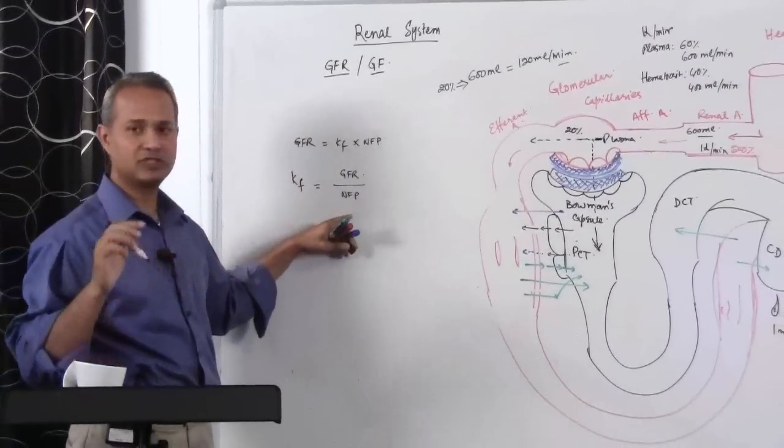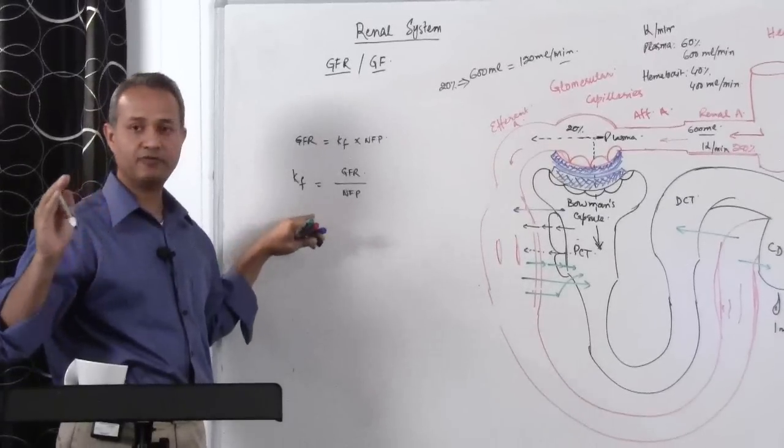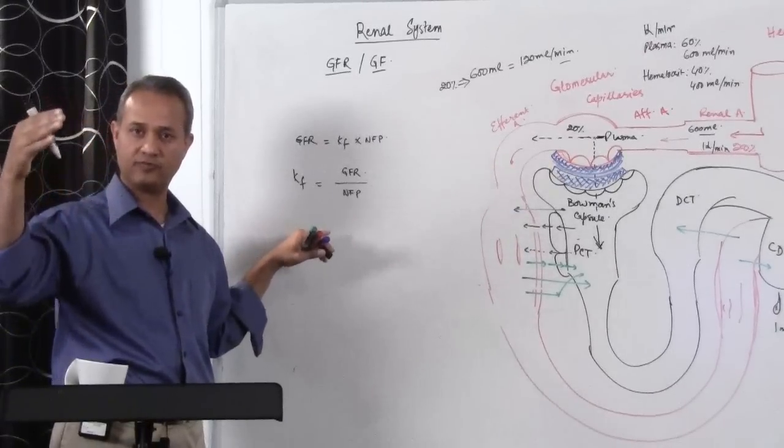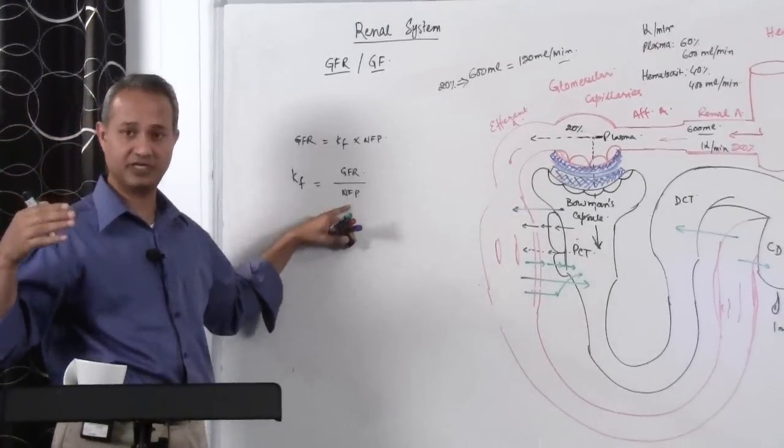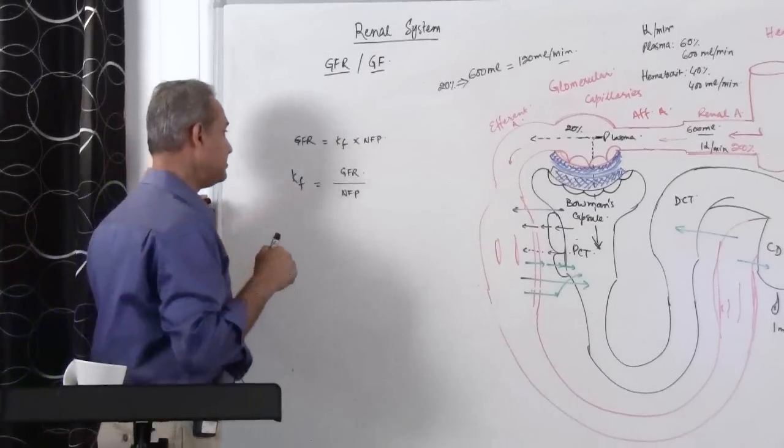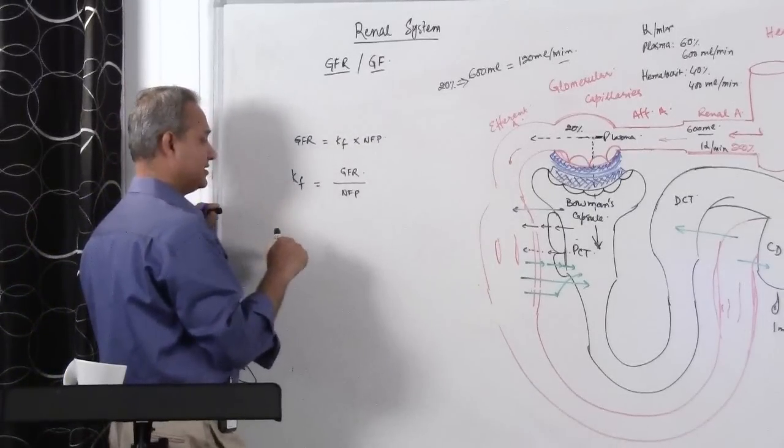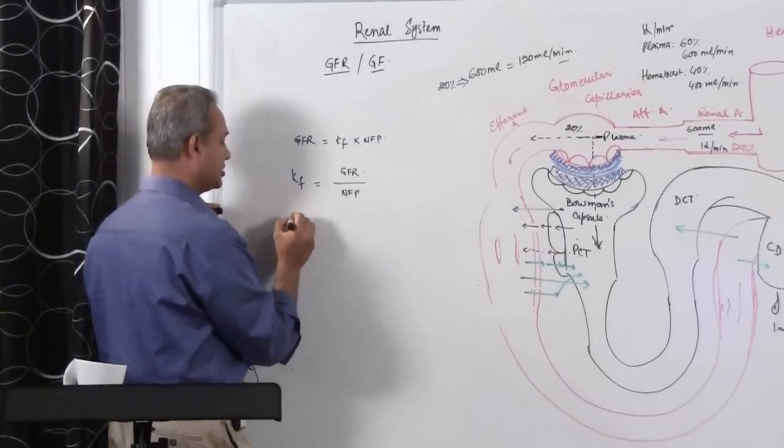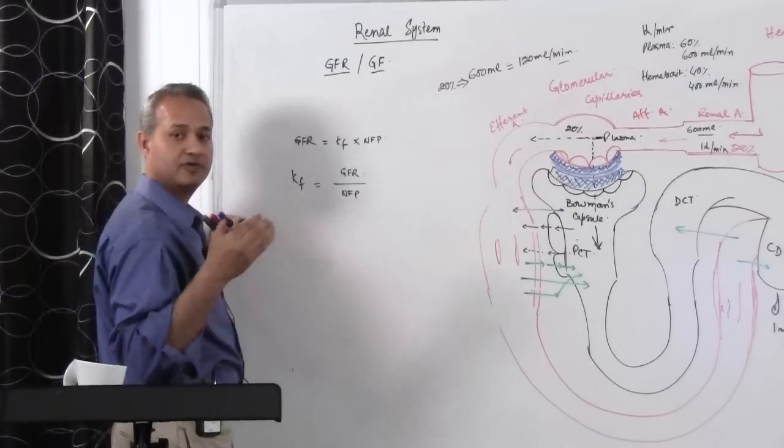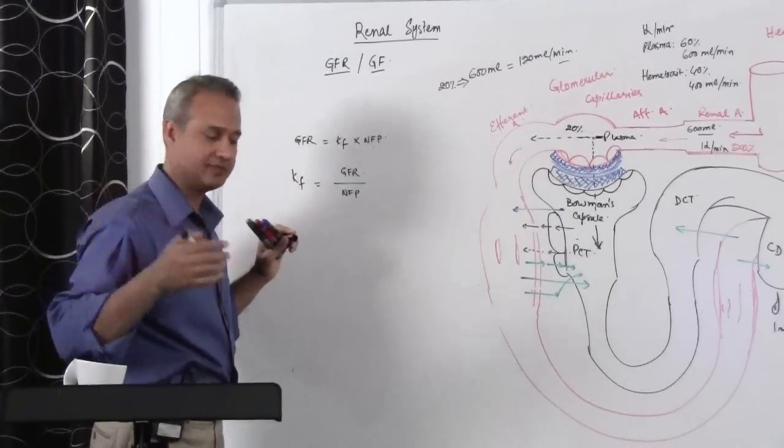So again I am going to use some standard values to calculate this for us. We would then, as we go for the net filtration pressure, we will see what the variations would mean. Now, important thing here is, filtration fraction is for renal substance, total renal substance. So let us do that.